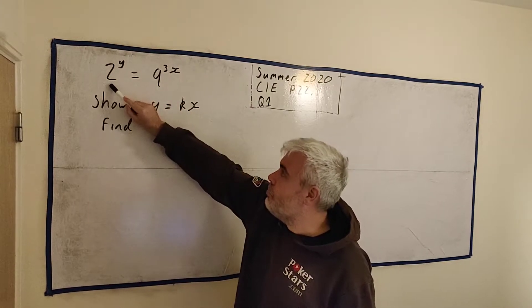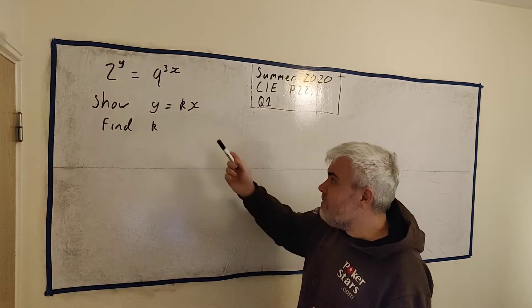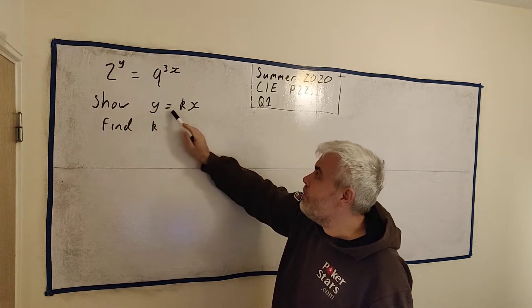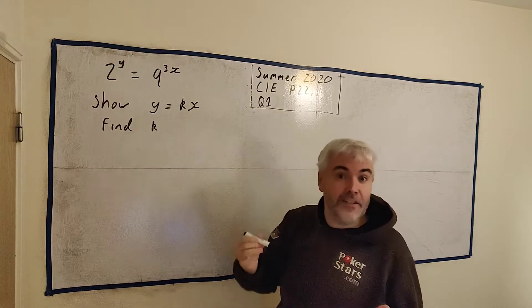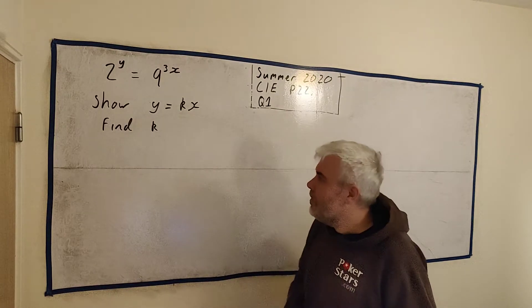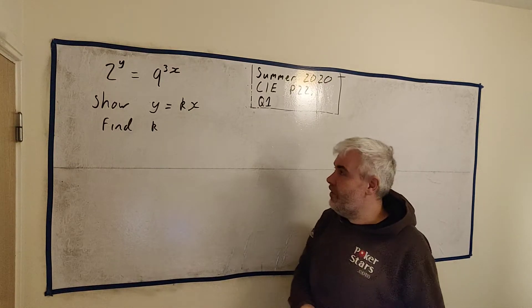So here was the question: 2 to the power of y is equal to 9 to the power of 3x and they asked us to show that y is equal to some constant k multiplied by x and they said to use logarithms to do this. So that was a great advantage. And find k, what is the value of k to 3 significant figures.